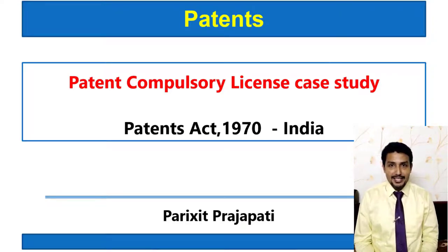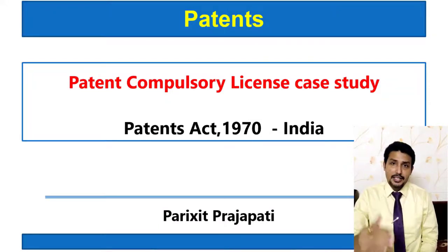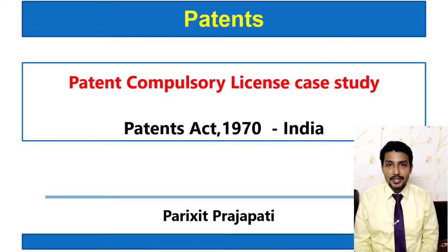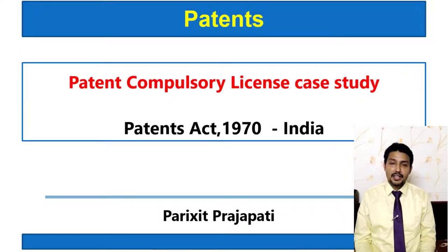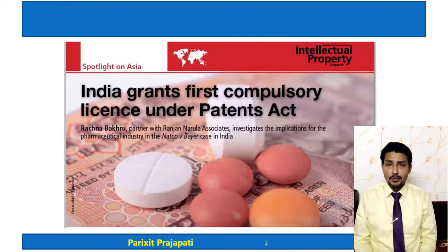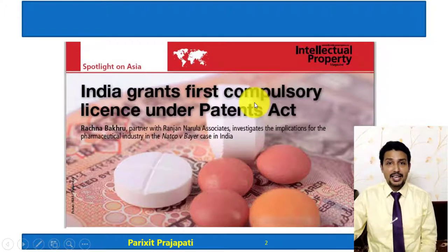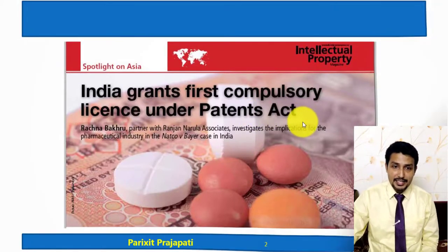Hello everyone, welcome to this session on patents. Here we are going to discuss about the Patents Act 1970 in India, specifically the topic of compulsory licenses. We will discuss one case study. We have already discussed what a compulsory license is, when it is given, the conditions for granting it, and how to apply. You can refer to that earlier session via the link in the description. This is a very important case — the first compulsory license ever granted under the Patents Act in India.